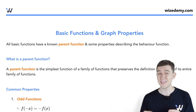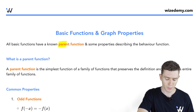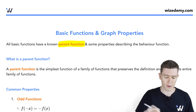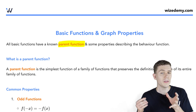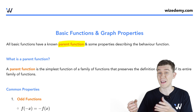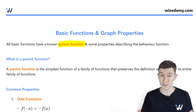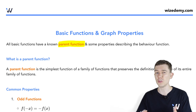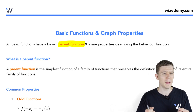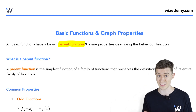Almost every basic function we look at has what's called a parent function. A parent function is basically a graph with the same shape and characteristics of more or less anything we'll see, just with some transformations to it. Maybe we'll shift parent graphs around, maybe we'll stretch them or reflect them somehow.